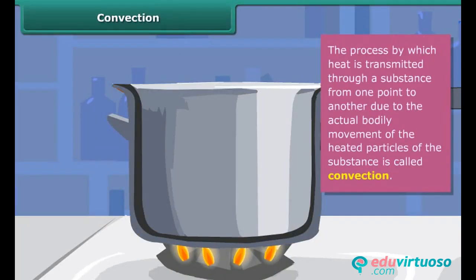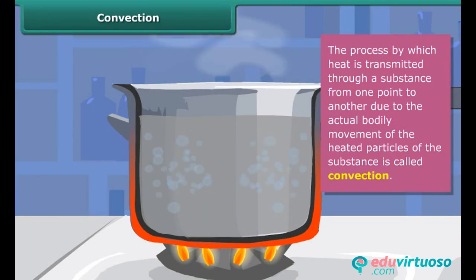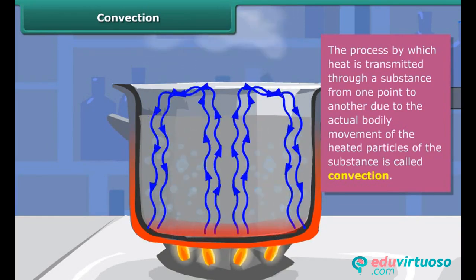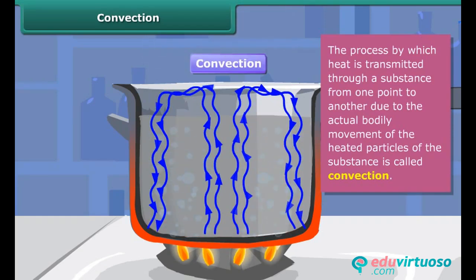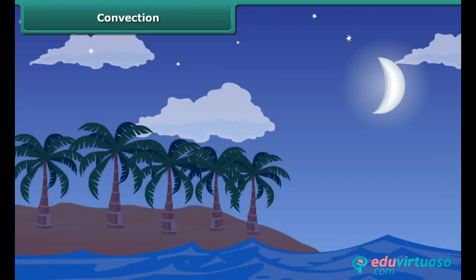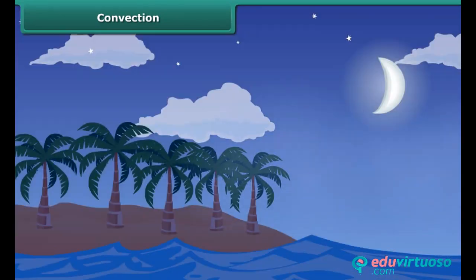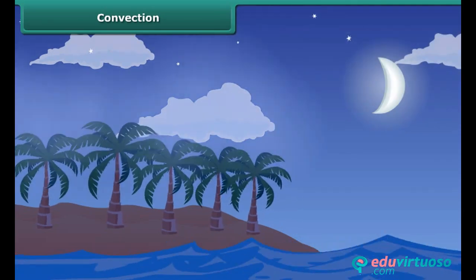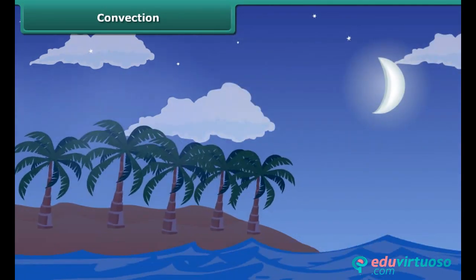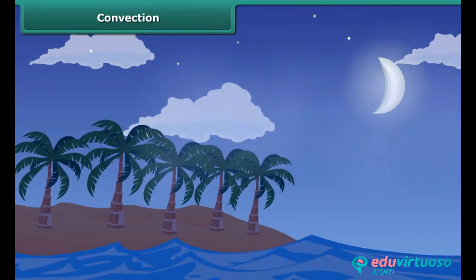The process by which heat is transmitted through a substance from one point to another due to the actual bodily movement of the heated particles of the substance is called convection. Convection of heat takes place in fluids — that is, liquids and gases — and involves the movement of matter from hot regions to cooler regions. In convection, heat is carried by moving gases like air and by moving liquids like water. A movement of air which carries heat from a warmer place to a cooler place is called a convection current.